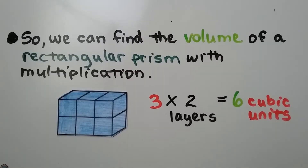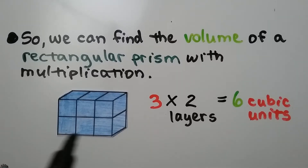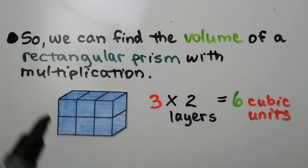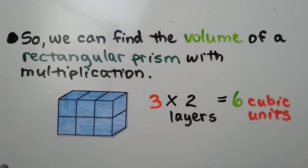We can find the volume of a rectangular prism with multiplication. We have 3 unit cubes in the base and there are 2 layers. 3 times 2 is equal to 6 cubic units.